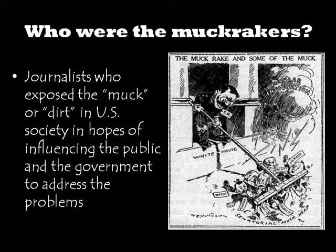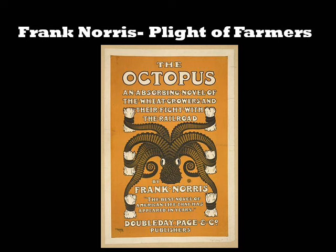The first muckraker that we're going to talk about today is Frank Norris. Frank Norris wrote a book called The Octopus in 1901, which is a fictional account about the struggle that farmers were engaged in with railroad monopolies during the age of industrialization. It helped lead to the breakup of these monopolies, like what takes place in the Supreme Court case Northern Securities versus the U.S. in 1904.